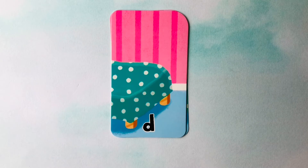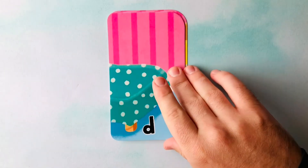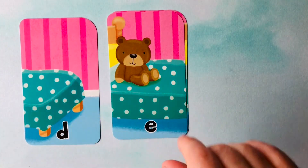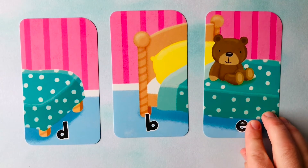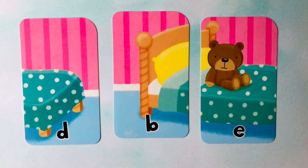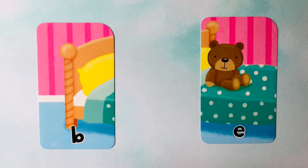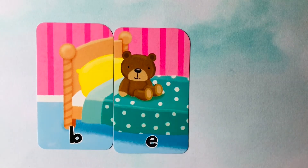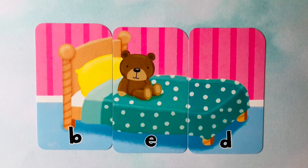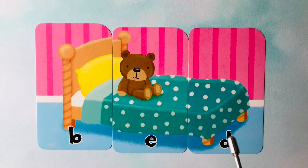Let's learn how to spell words. Let's find out what this first word is. We have a D, we have an E, and a B. These letters make a picture together. With a B, an E, and a D, we can spell bed. So we'll go B, E, and D. Bed. We spelled bed. B, E, D. Bed.